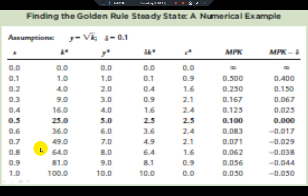Saving rate 0.5 is the golden rule steady state. After that golden rule steady state, we have decreasing consumption rate, whereas we have a higher rate of saving, higher capital stock, higher output, and higher level of depreciation, but after that point we have a decreasing consumption rate.